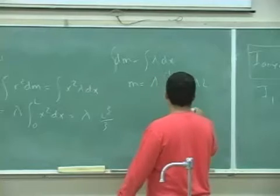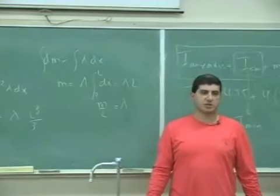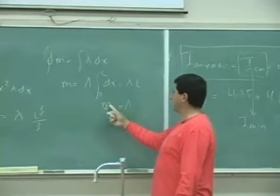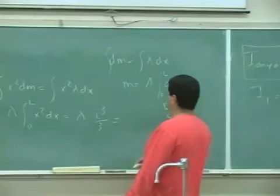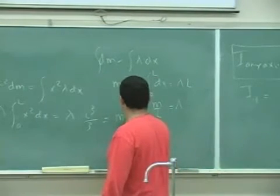Lambda l. Lambda is equal to m over l. In other words, what we basically showed is that for a uniform rod, the linear mass density equals the mass of the rod over the length of the rod. And then you put that into the rod, you get what? m l squared over three.